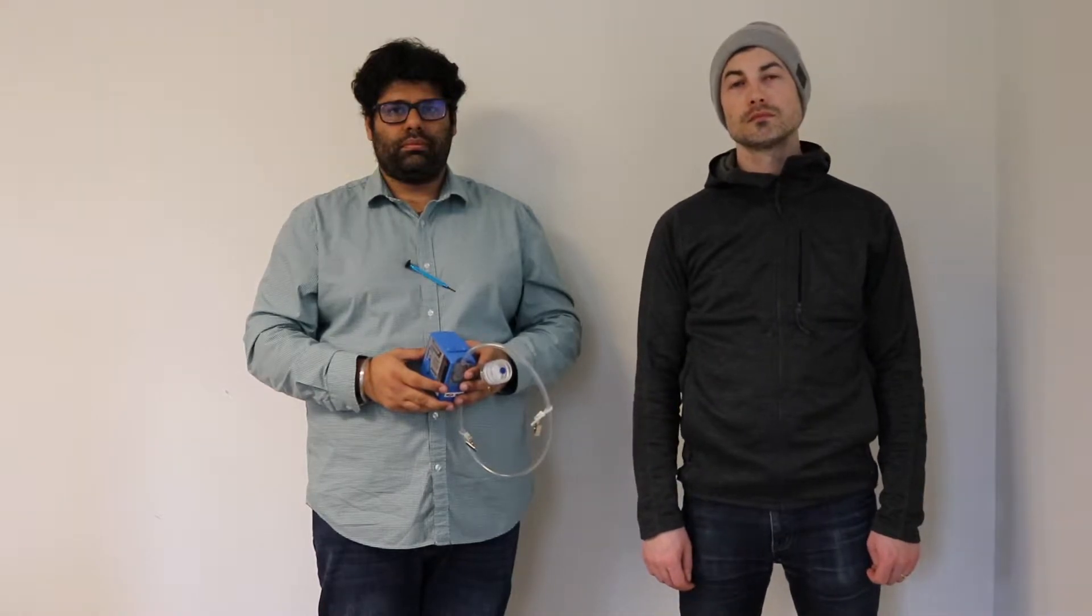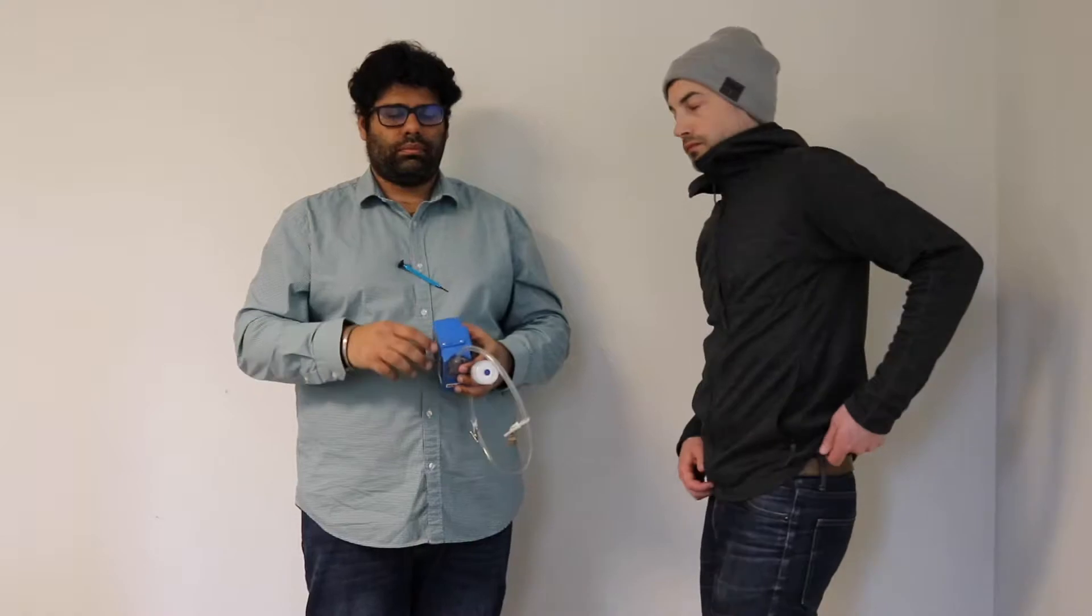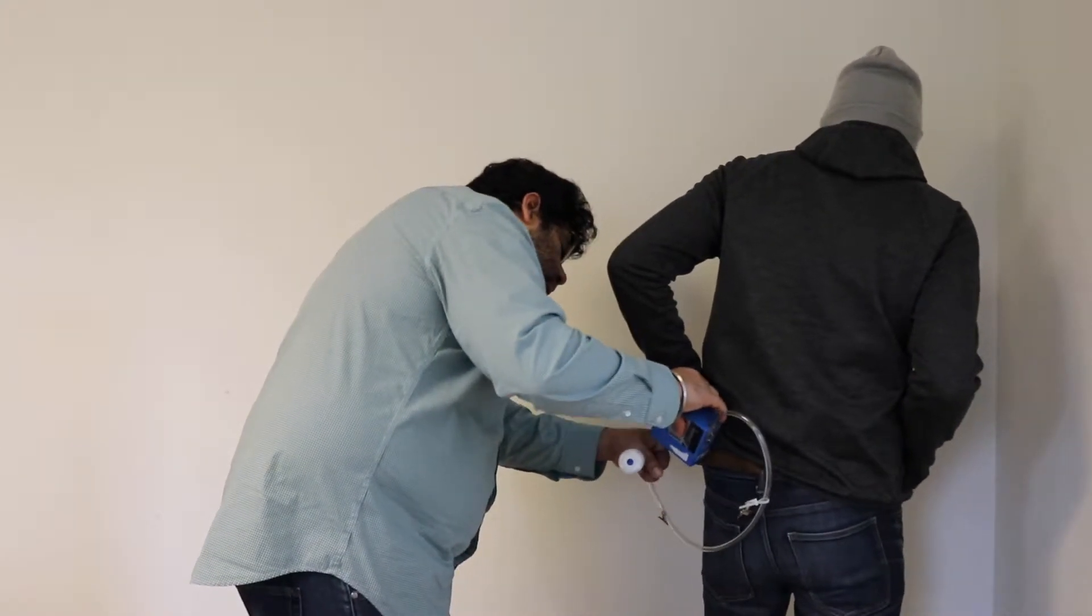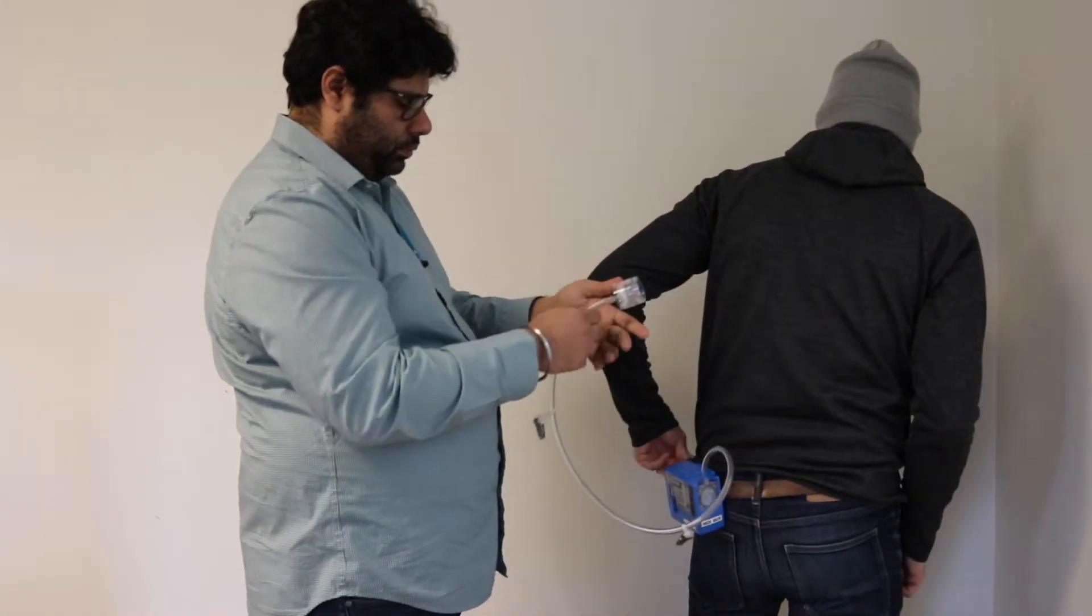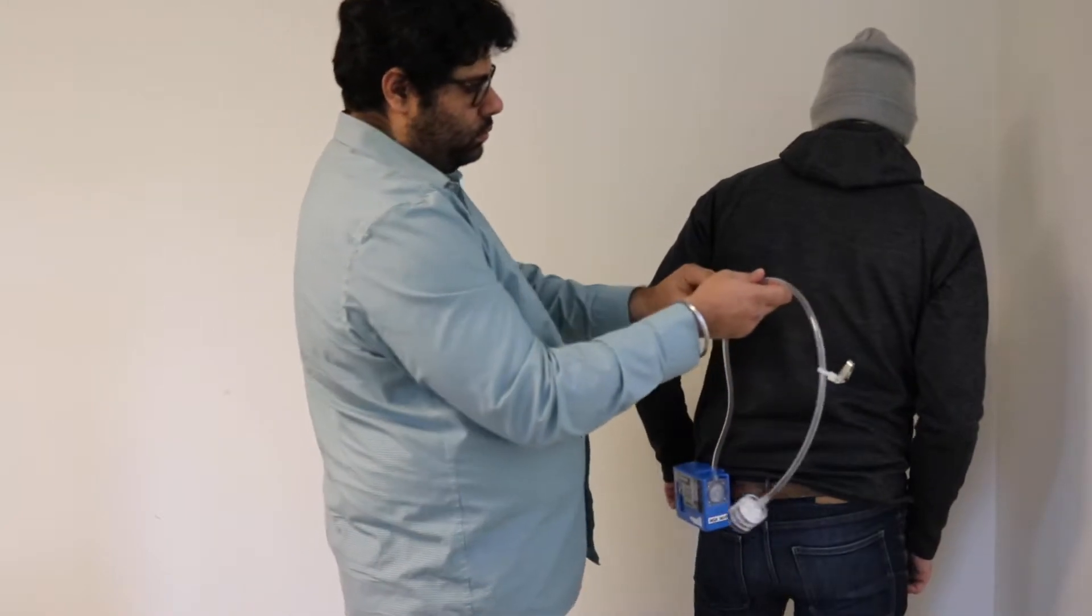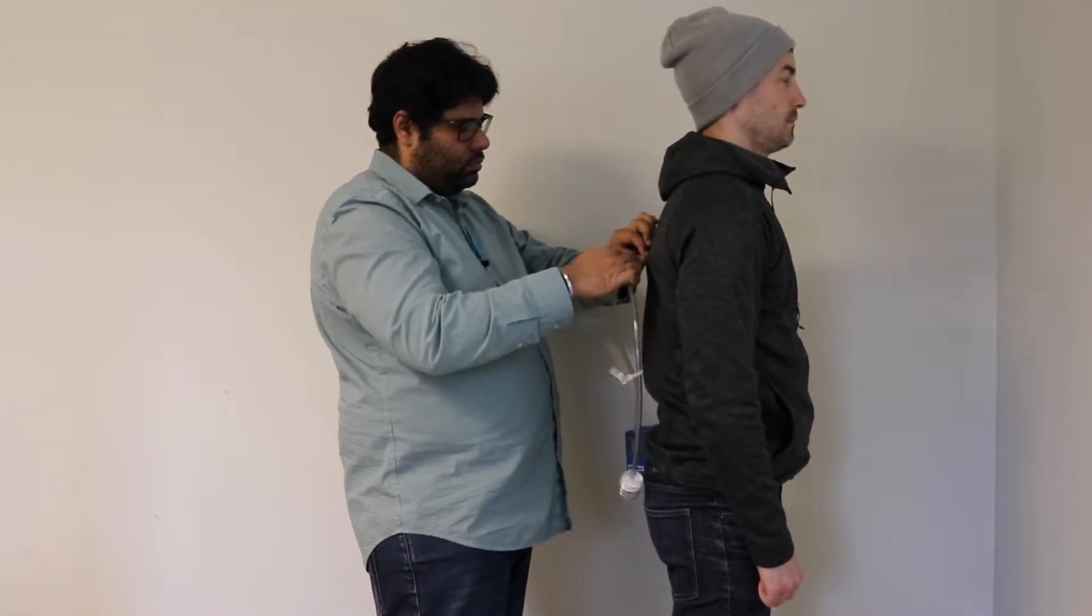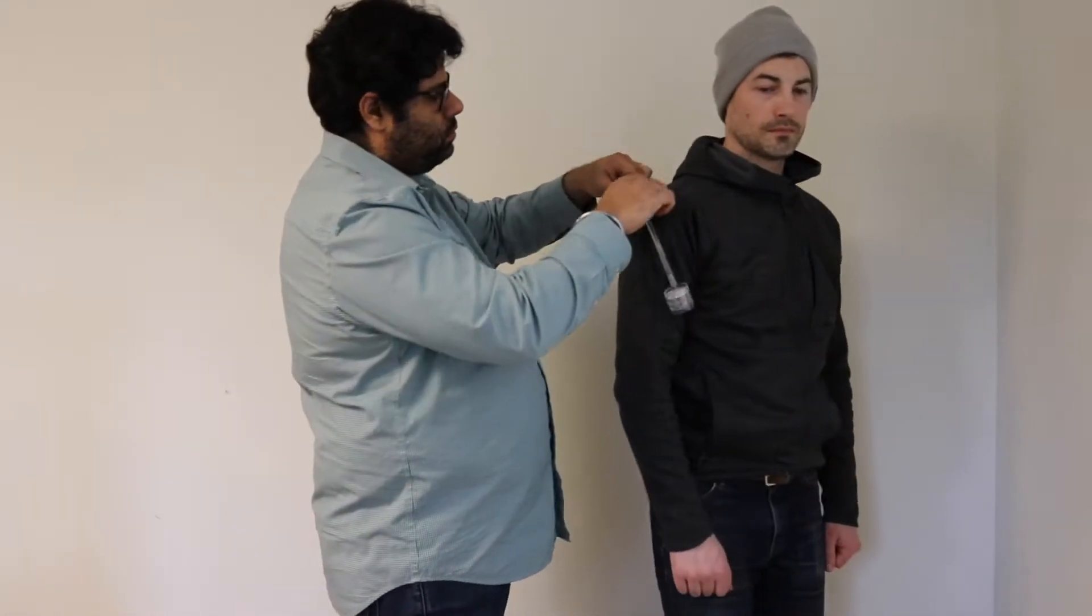Select the worker to be monitored. Place the sampling pump on the employee's belt. Position the tubing over the worker's back and secure the tube to the worker's clothing. Ensure that there is enough slack for the worker to bend and move while working.